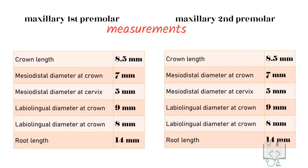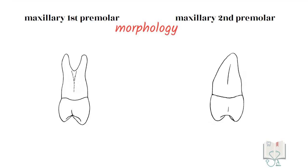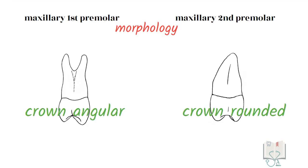Looking at their measurements, all the dimensions of both premolars are exactly the same. Morphologically, the crown of the second premolar appears more rounded than the first premolar. Moreover, a major difference is seen in the roots, where the first premolar has two roots and the second premolar has one root.